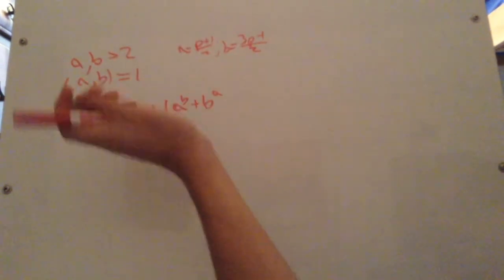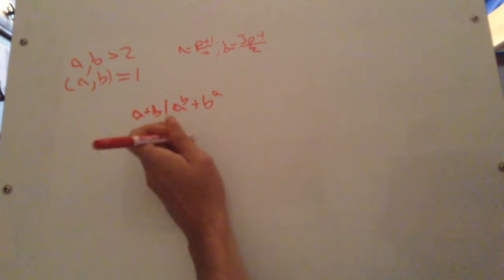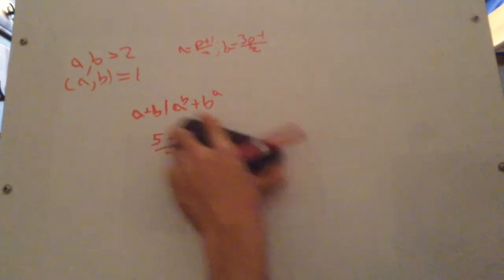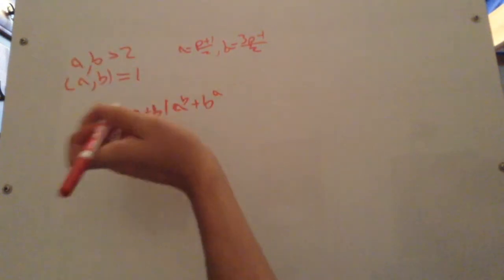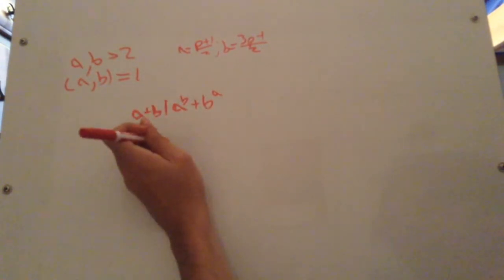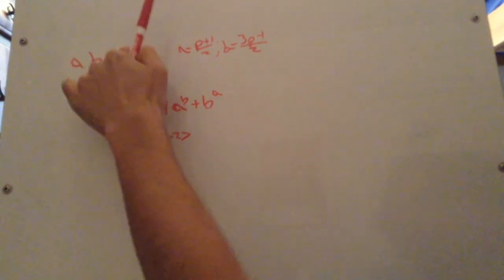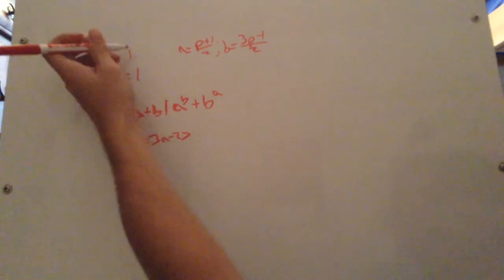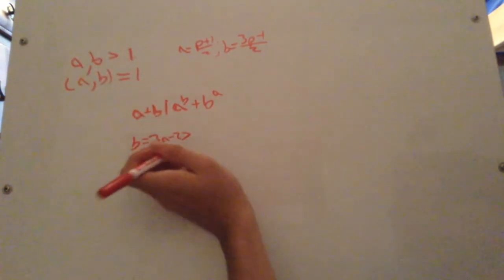So we're good in that front. And since this is a prime of the form 4k plus 1, the smallest one is 5. So 5 plus 1 over 2 is 3. And as we said, so that's bigger than 2. And as we said before, b equals 3a minus 2.